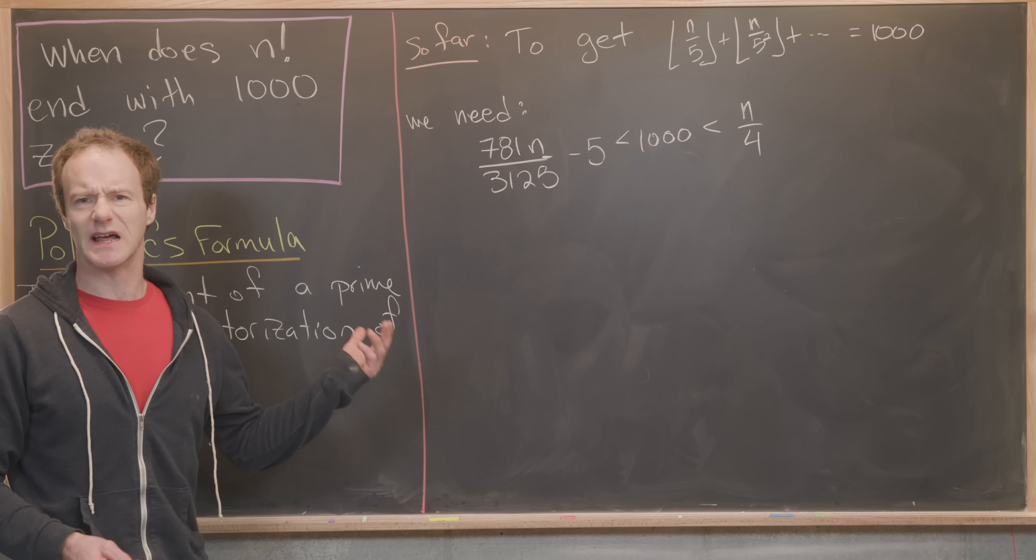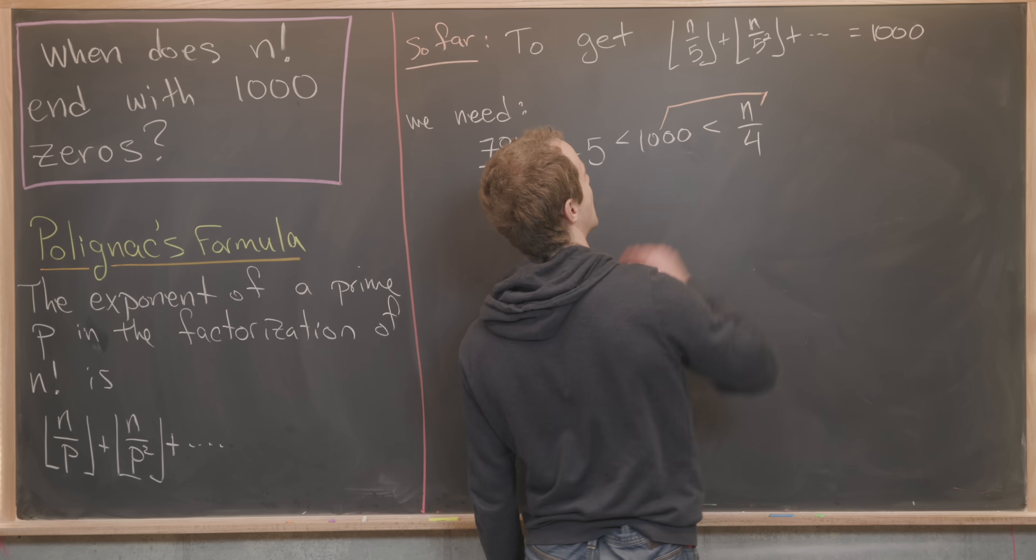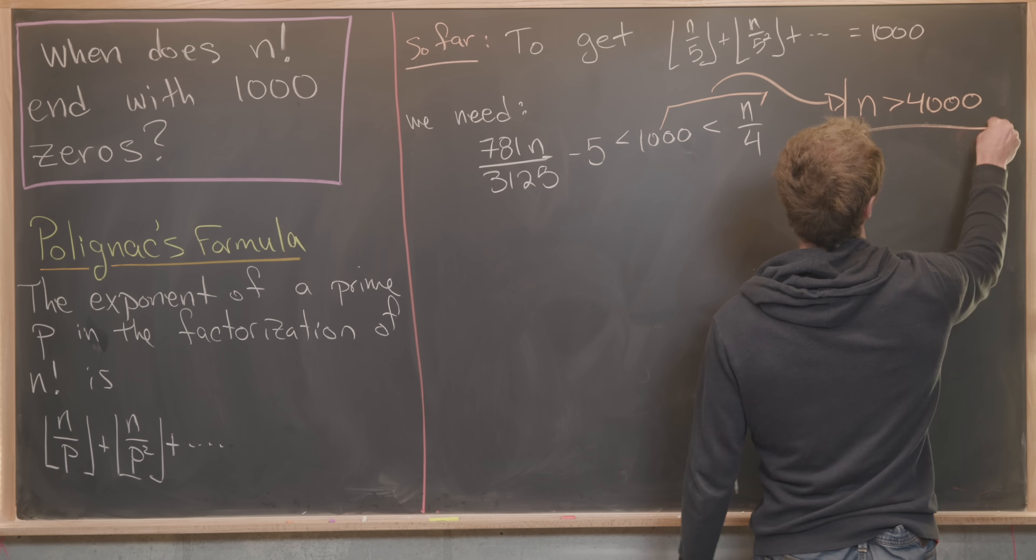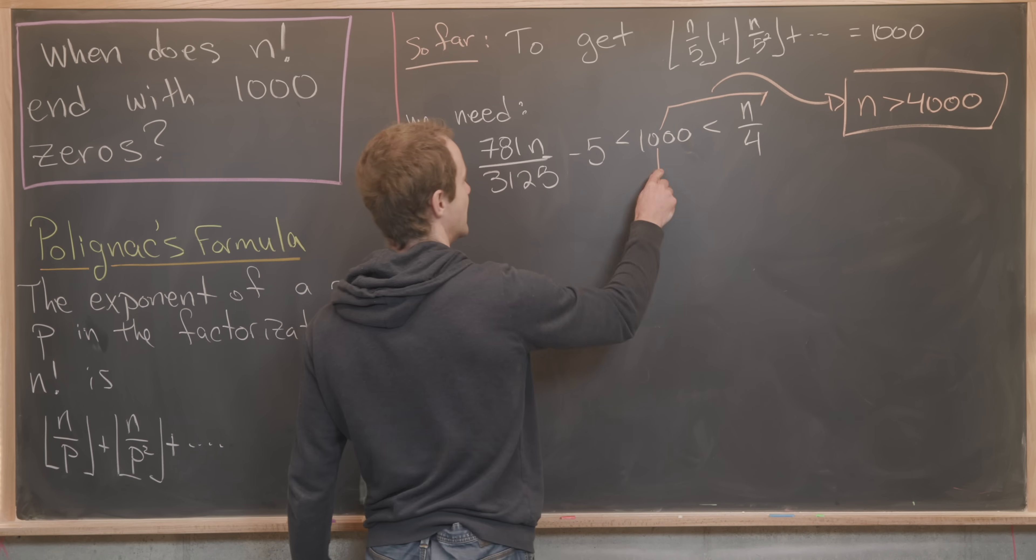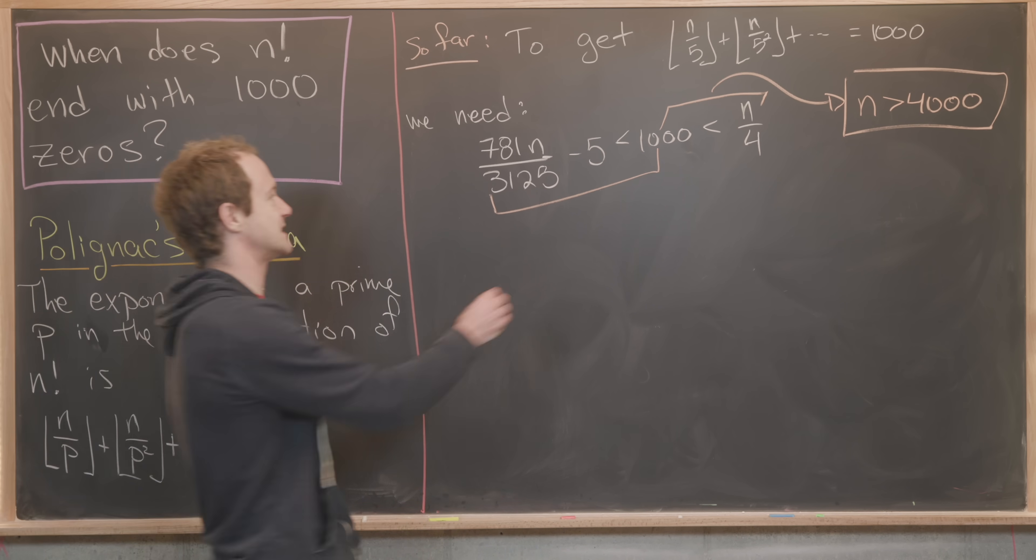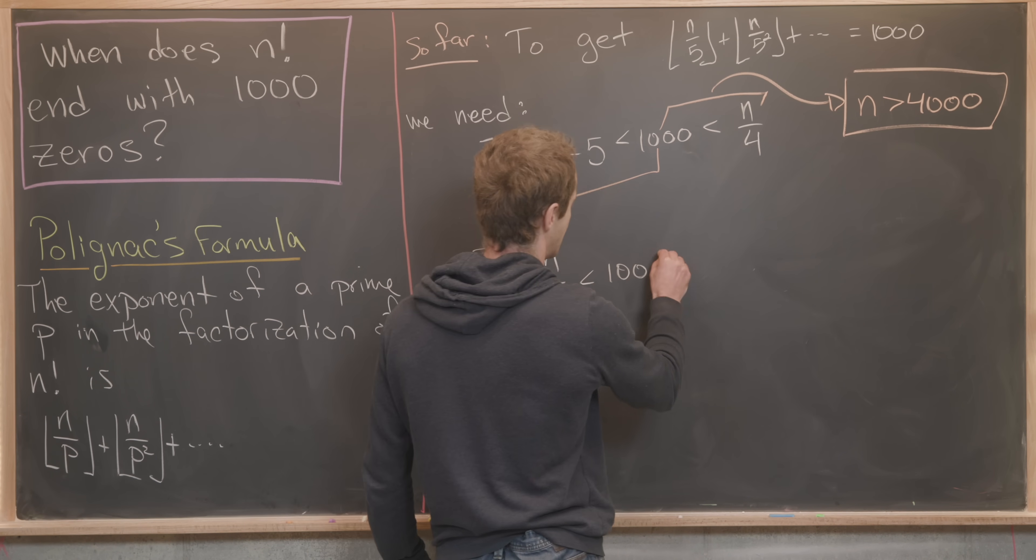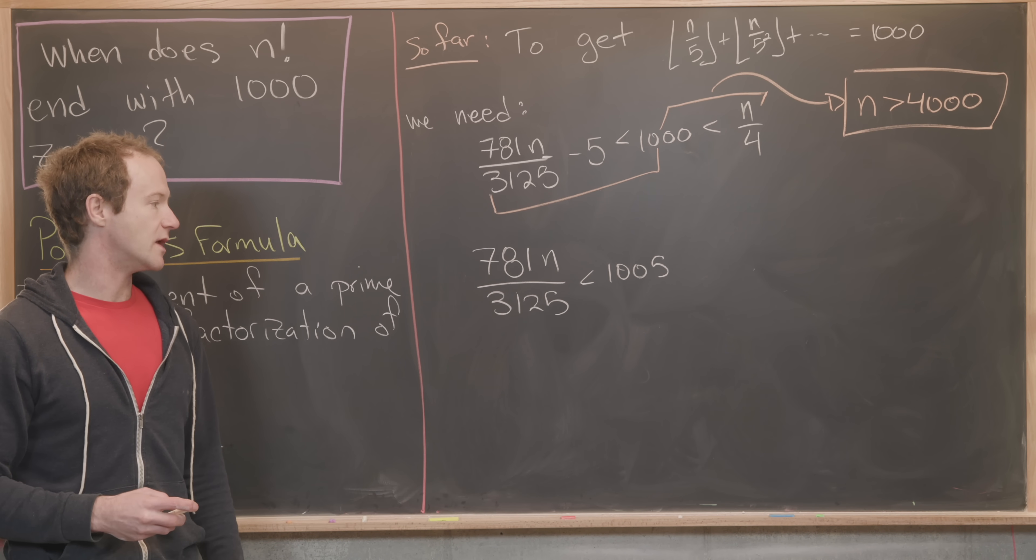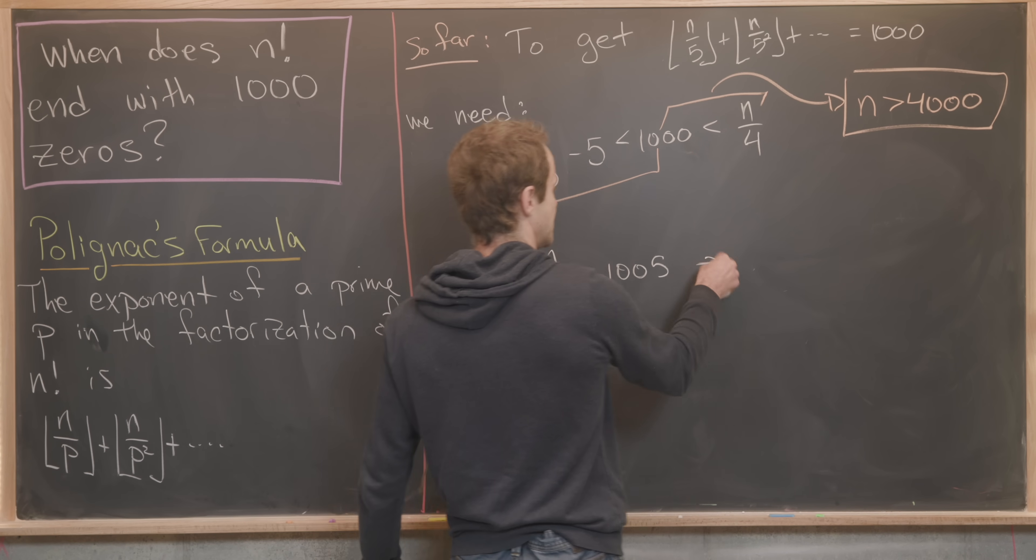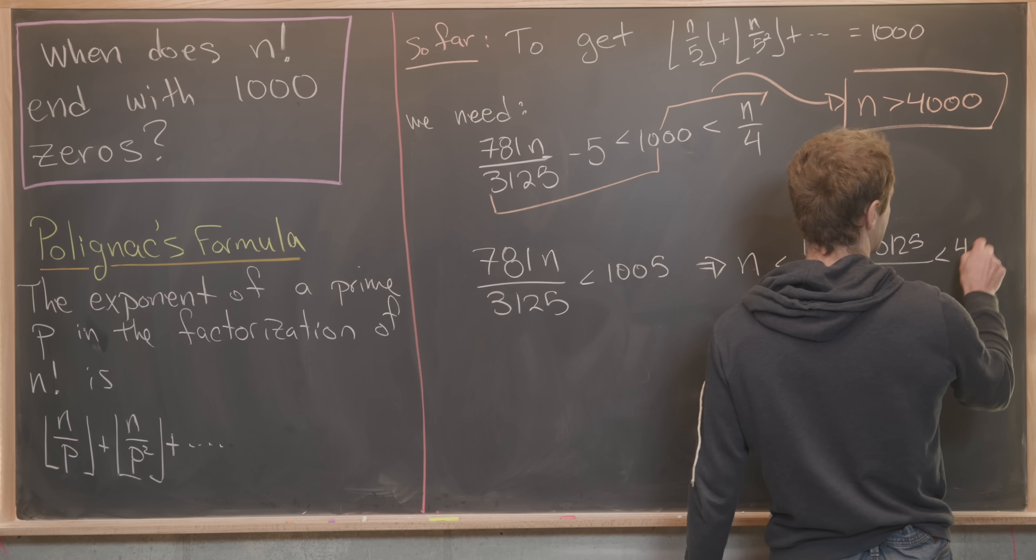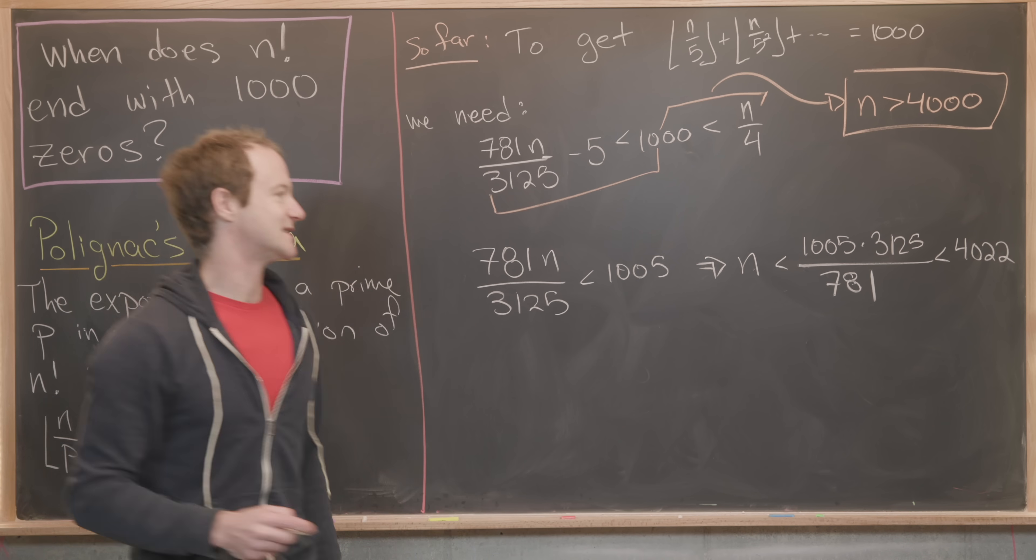Let's see if we can use this to get a stricter bound for n. Like we did on the last board, we can see that this portion of the inequality implies that n needs to be bigger than 4000. Now let's take this portion of the inequality and see what that gives us. That tells us that 781n over 3125 must be less than 1005. We can multiply by 3125 and divide by 781, and we'll get that n must be less than 1005 times 3125 over 781. This number is in fact less than 4022.